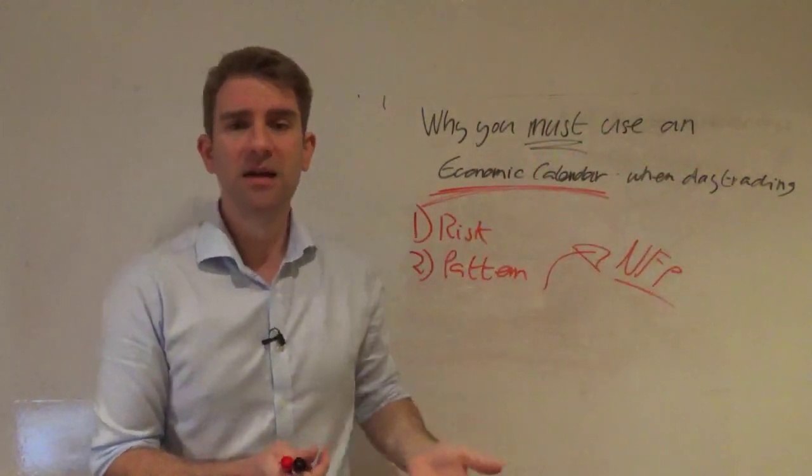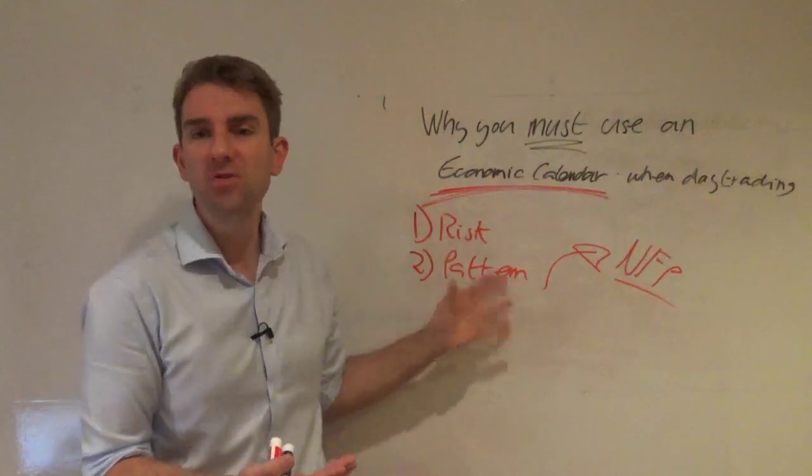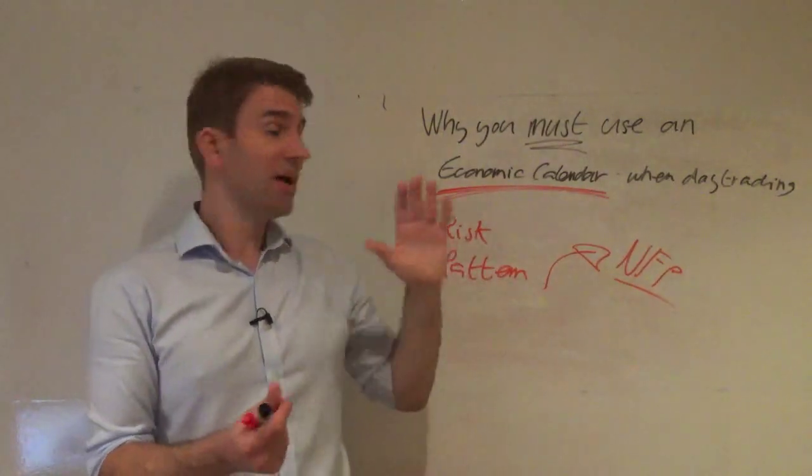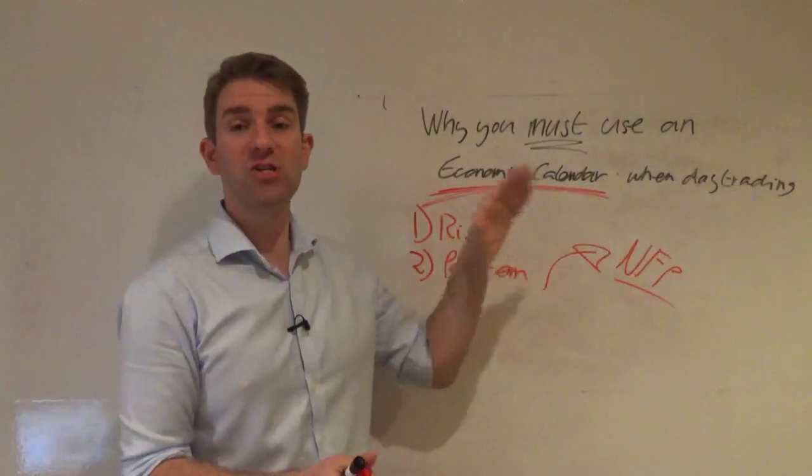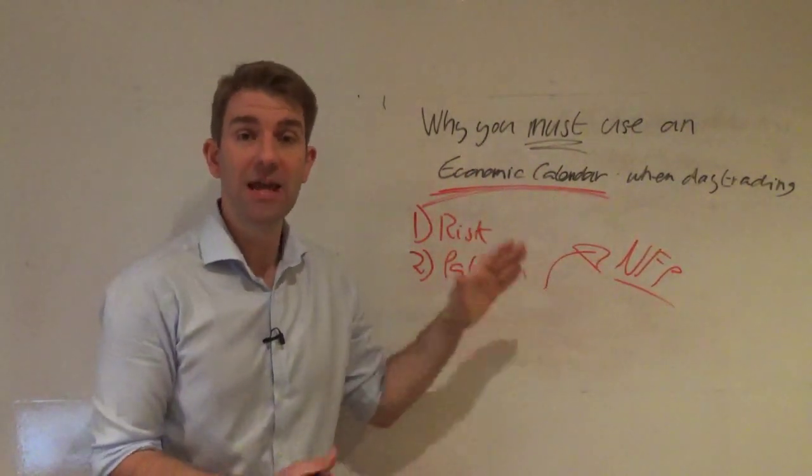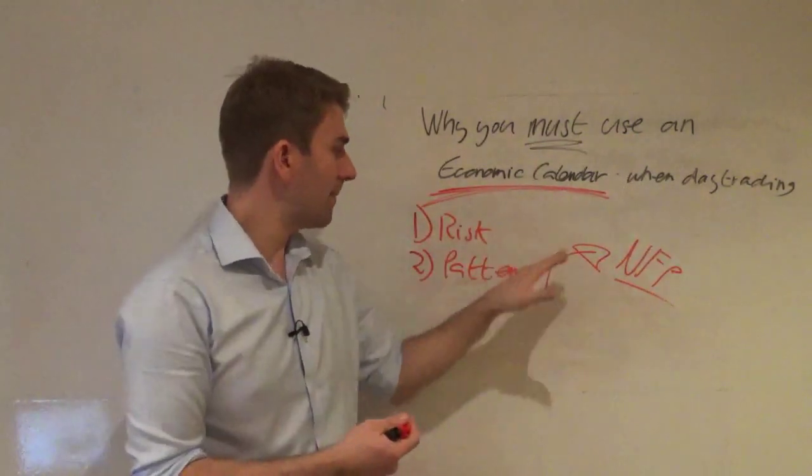When you get to a position where it's 90% probability nothing's going to happen, that's when you can maybe take the risk on. The pattern's not going to change much. But when you get a situation where potentially a big market moving number that suggests the economy is changing significantly is 50-50 or there's good chance of it being one way or the other, then the pattern of the market before the announcement will change.